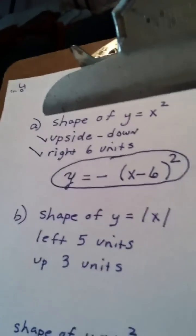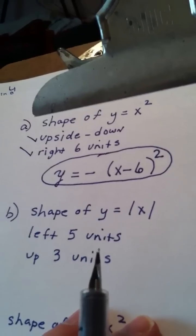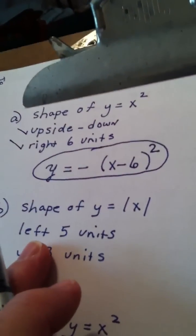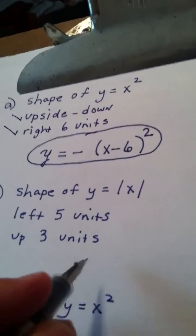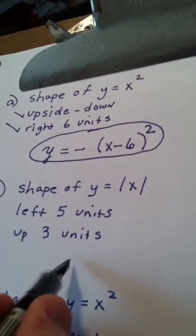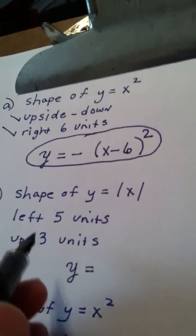Okay, in the next problem, I have the shape of y equals the absolute value of x, so it's a v. We're moving it to the left five units and up three. Well, the answer is going to be y equals.